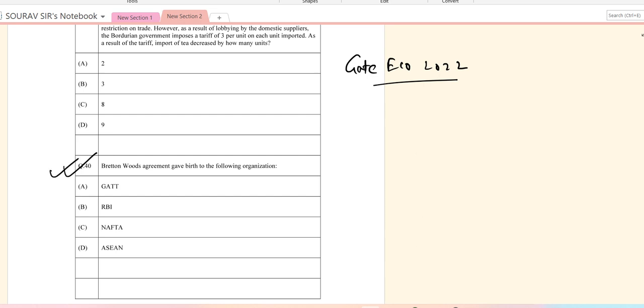So a bit of a theoretical question. Question 40 is pretty easy. They are asking about the Bretton Woods agreement and which of the following organization took birth in that, and that is GATT.